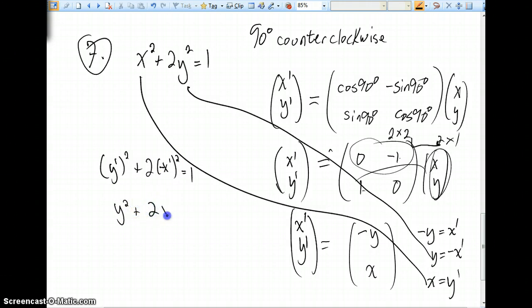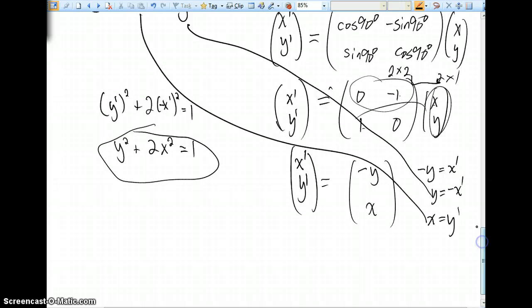As is very much the common trend, we can drop the primes. The primes are helpful, telling us this is where we end up. This would be the new ordered pair. The new x, y value that we would arrive at after a 90 degrees rotation. But in the end, we can see this right here is the equation of our transformed ellipse. Very quickly, let's do one more, and then we'll be done with rotations.